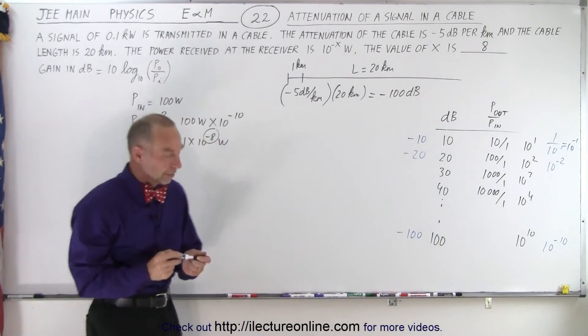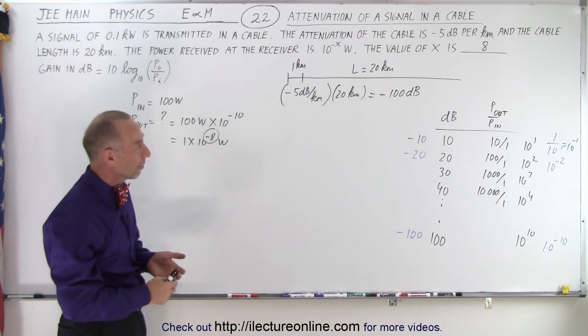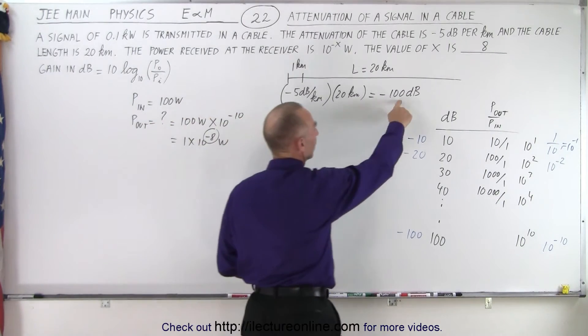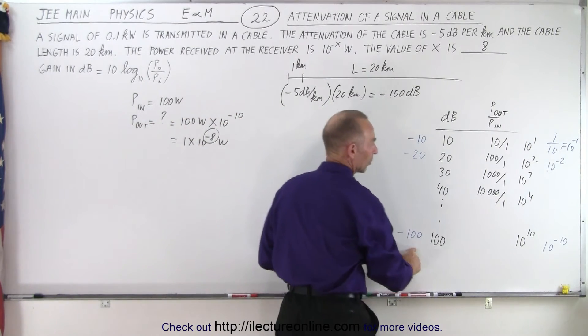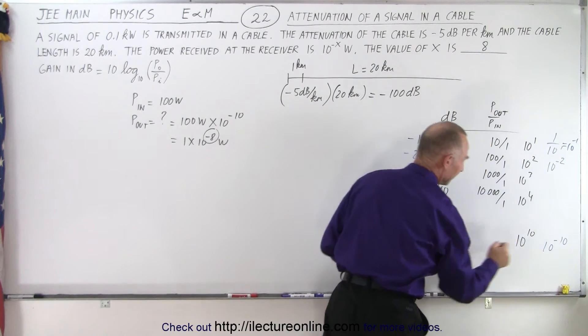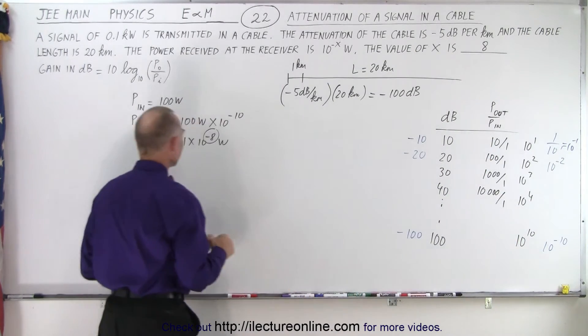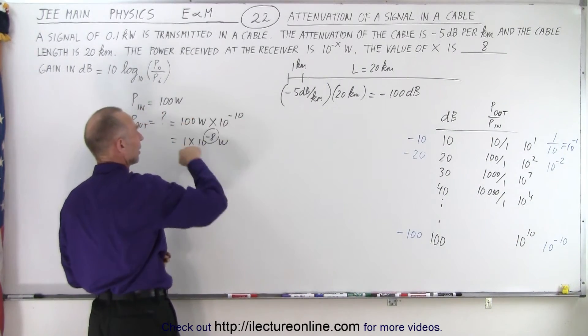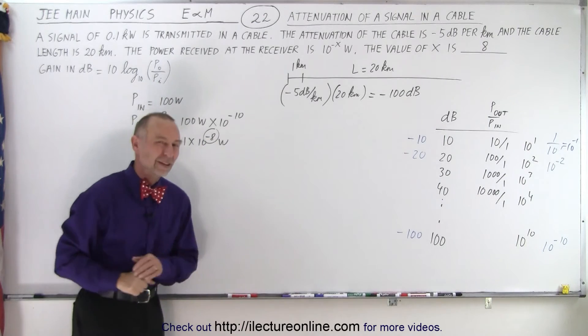That's how you would think about it. You quickly realize that for 100 dB attenuation you have a power drop of 10^(-10) and from that we can quickly realize that the exponent we're looking for is 8.